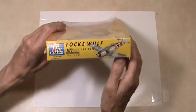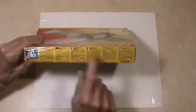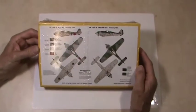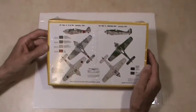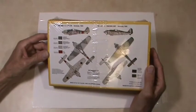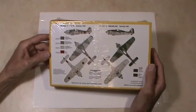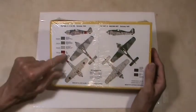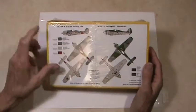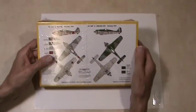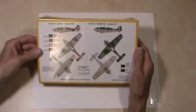Here's the end of the box, and here's your words in the various different languages. On the back we have painting instructions for two different versions of the airplane. This is Germany 1944, and this is Germany 1945. So that's two options for painting this particular model.